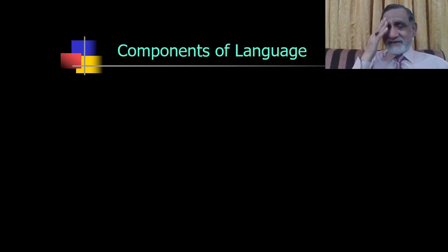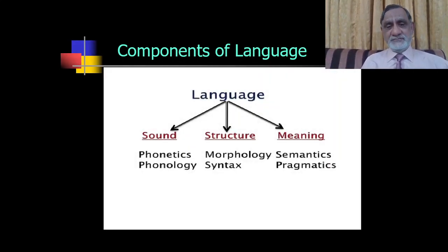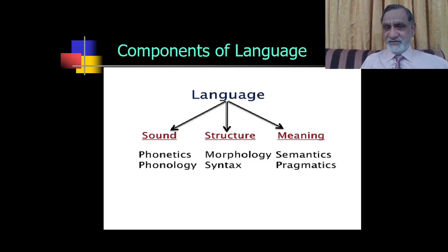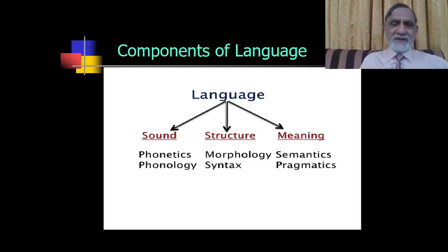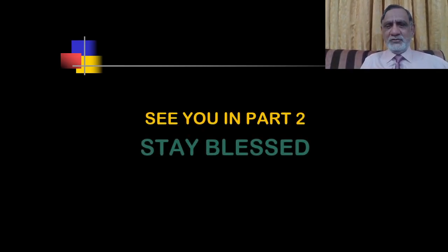We now come to the next segment of this topic: components of language. Every language has basically this sort of structure. Languages have sounds — and under sounds, languages have phonetics and phonology. Languages have structures — languages have morphology and syntax. And languages have meaning — under meaning, languages have semantics and pragmatics. In the coming lectures we are going to discuss each one of them thoroughly. Till then, see you in part 2. Stay blessed.